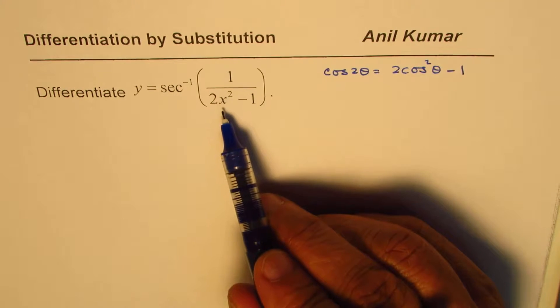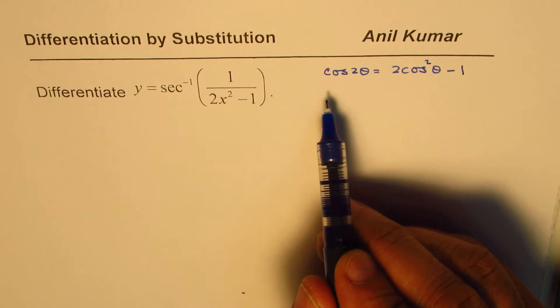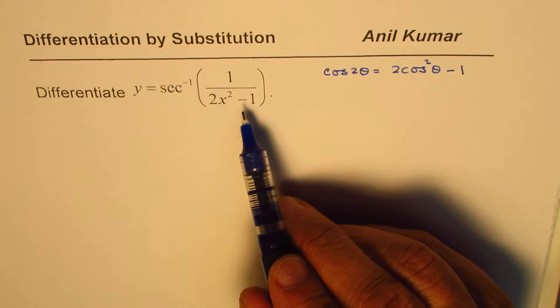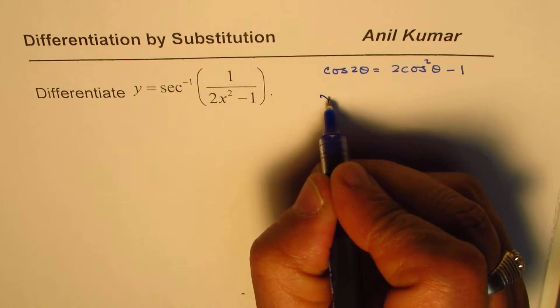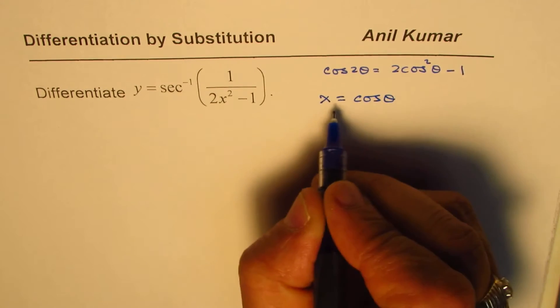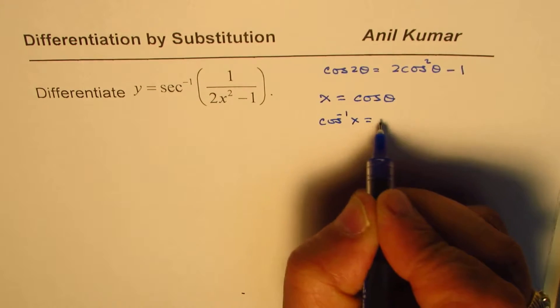Now, once we get 1 over cos 2 theta, we can write this as secant theta. And that will help us to solve or simplify the question. In this particular case, we'll make a substitution of x equals to cos theta. So, if x is cos theta, then cos inverse x is theta.